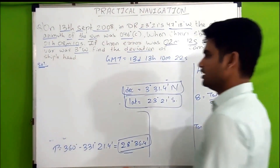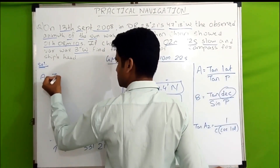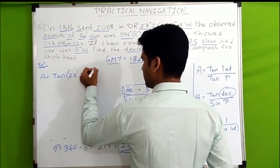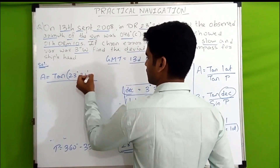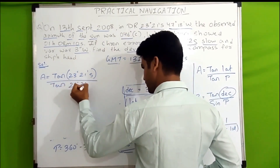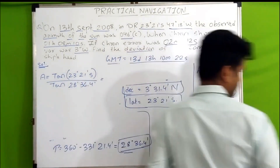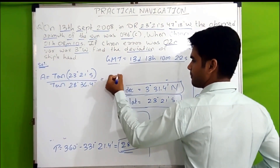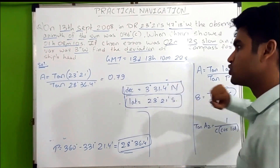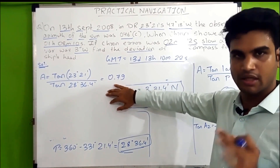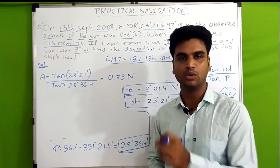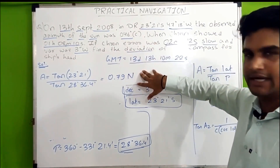To find value A: A = tan(latitude) ÷ tan(P). Latitude is 23° 21' South and P is 28° 36.4'. This gives A = 0.79. A is always named opposite to the latitude — latitude is South, so A is North. (The rare exception is when LHA is between 90° and 270°, in which case A is named the same as latitude.)